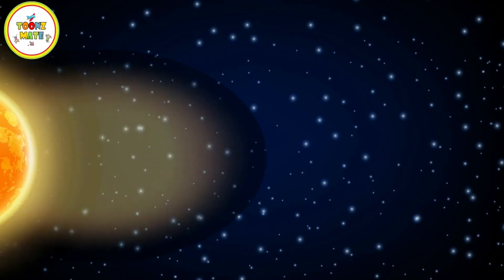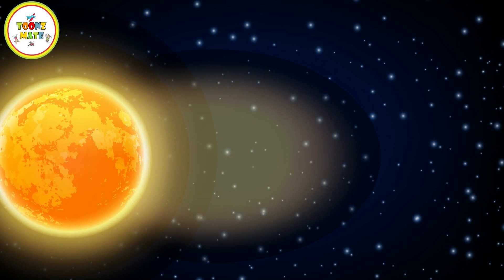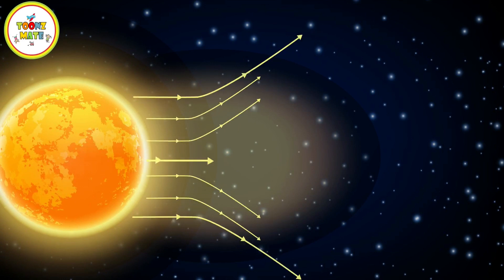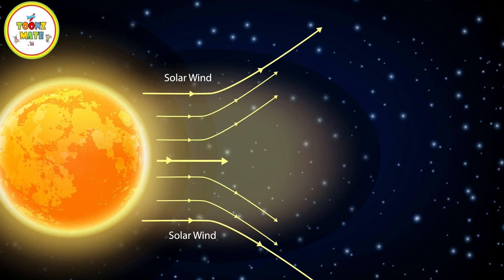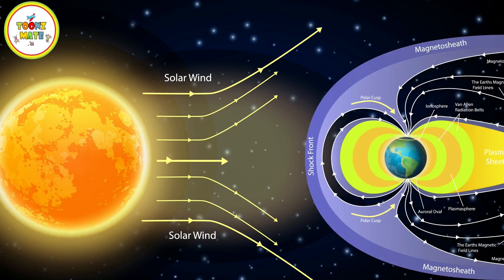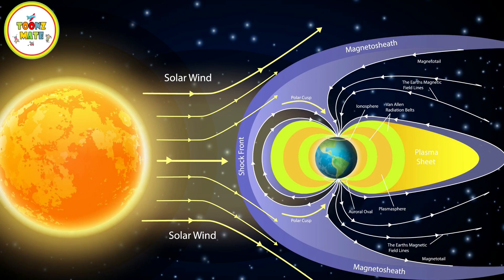The Sun also emits a constant stream of charged particles called the solar wind. The solar wind interacts with Earth's magnetosphere, causing phenomena like the auroras — the northern and southern lights — near the poles.